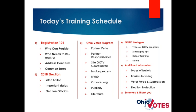Today we have a lot to go over. We're going to cover the basics of registration, what's going to be on the 2018 election ballot, and other important dates and notes about the election. Then we'll go over the Ohio Votes program, Get Out the Vote strategies, and additional information. Section 5 is the least pertinent to the work you'll be doing, but you're likely to get occasional questions about those issues, so I wanted to include that information for reference.